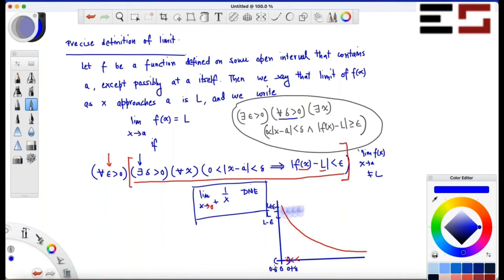We can ignore points to the left because we are looking at the right limit. So I can just remove this, so zero plus delta. Now can I say that there exists a point in this interval between zero and zero plus delta?